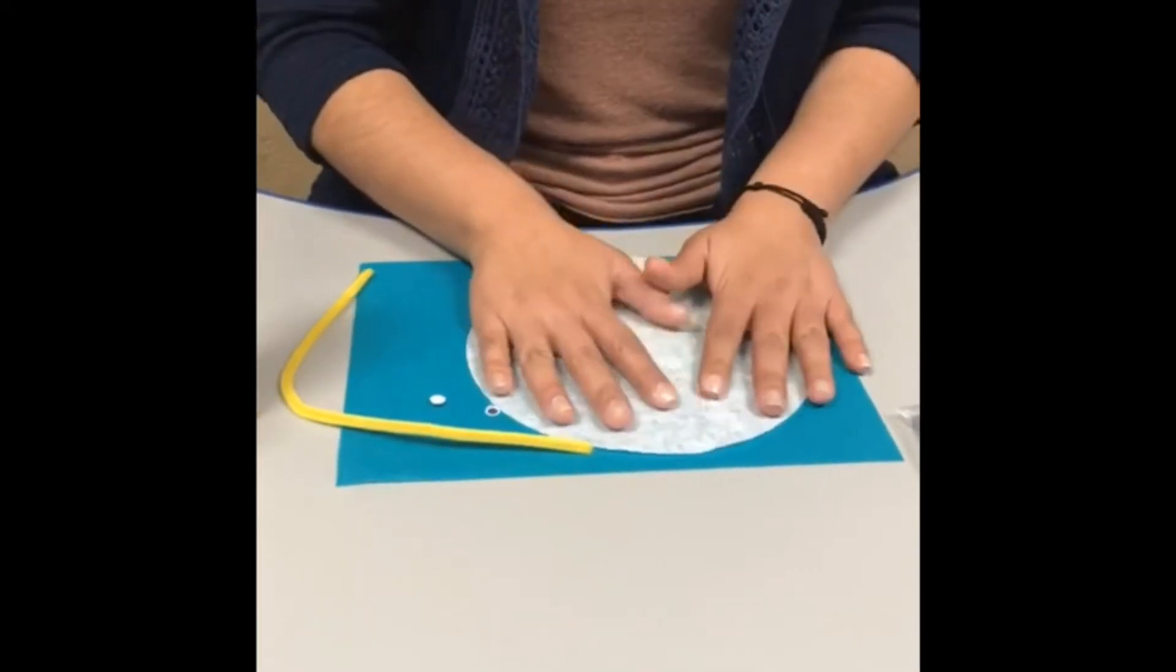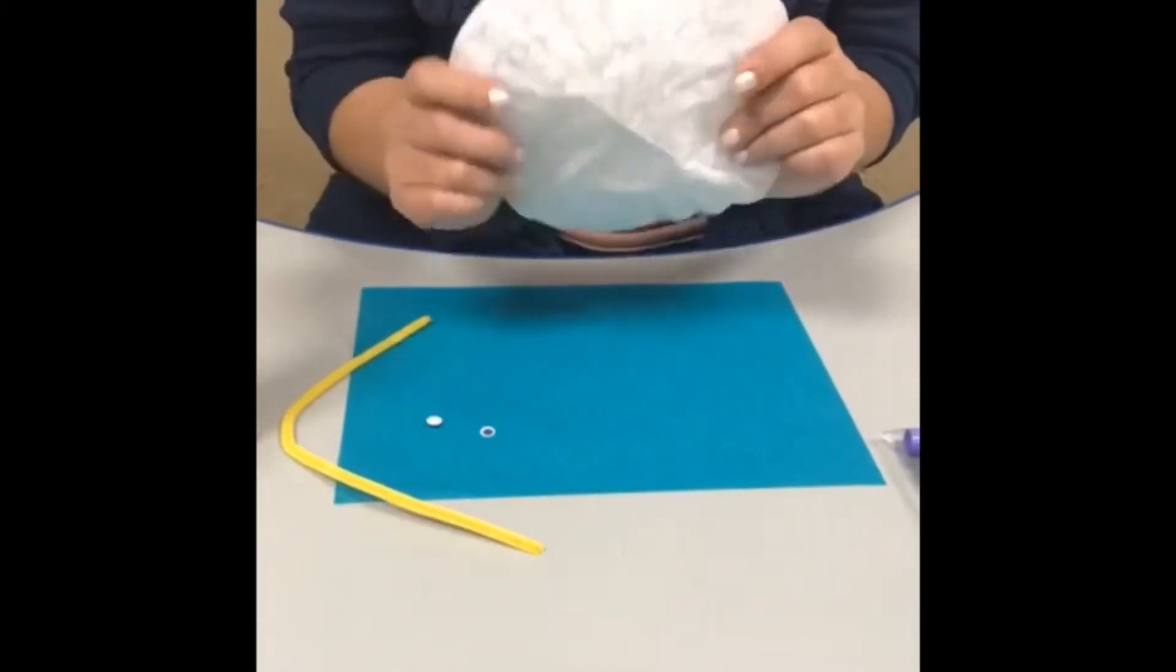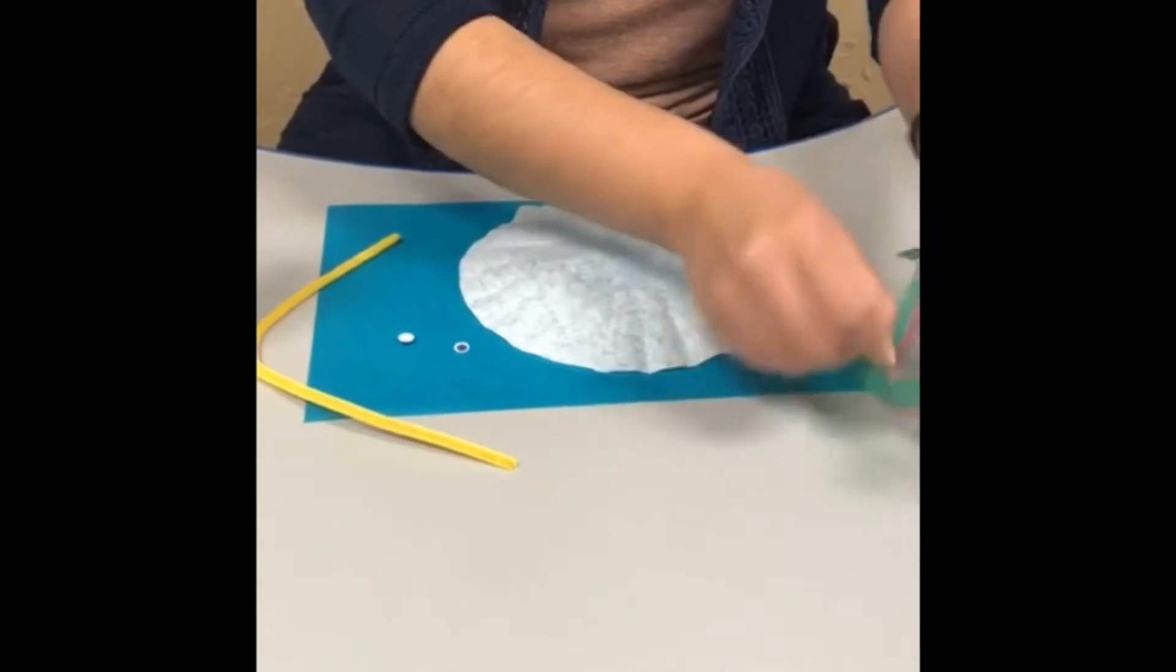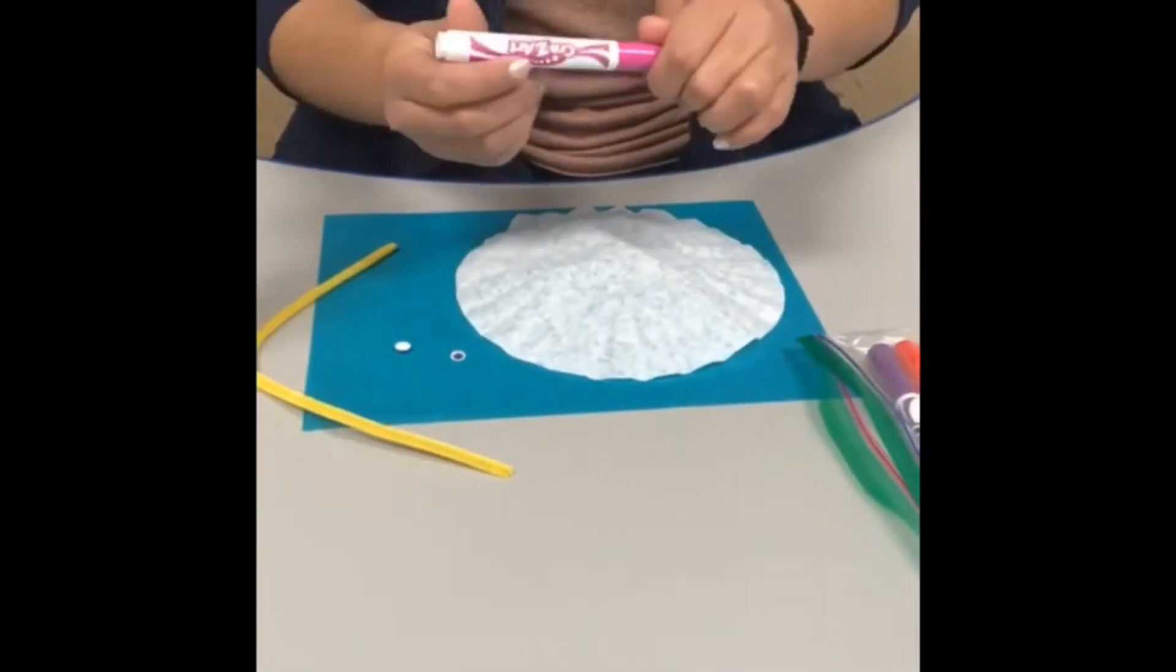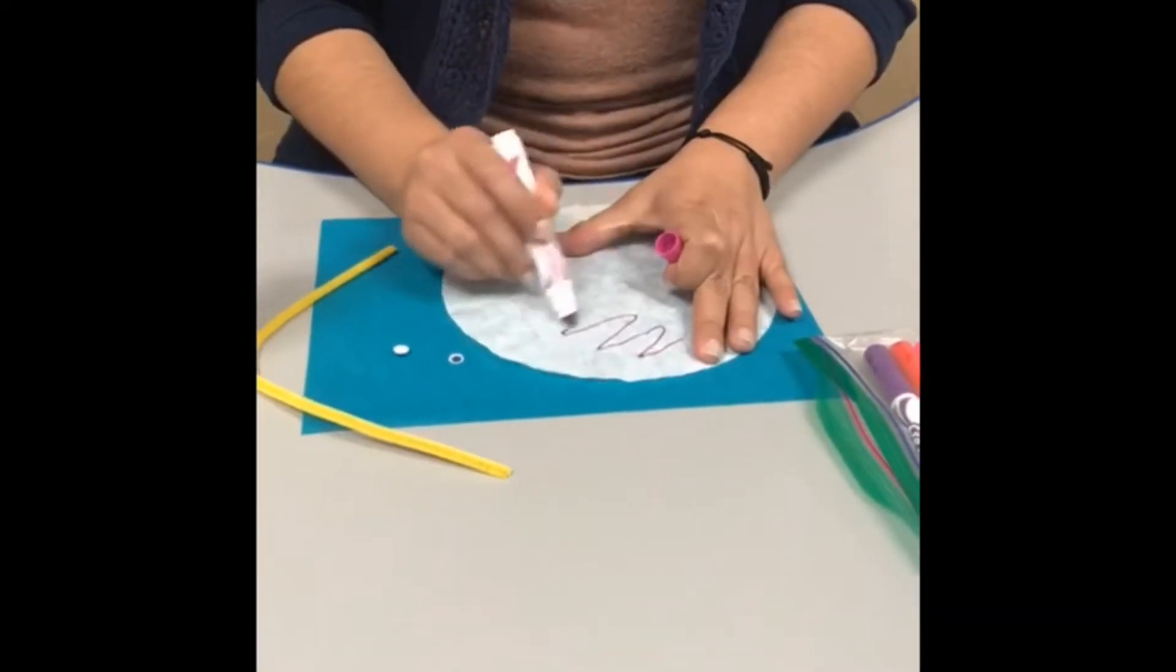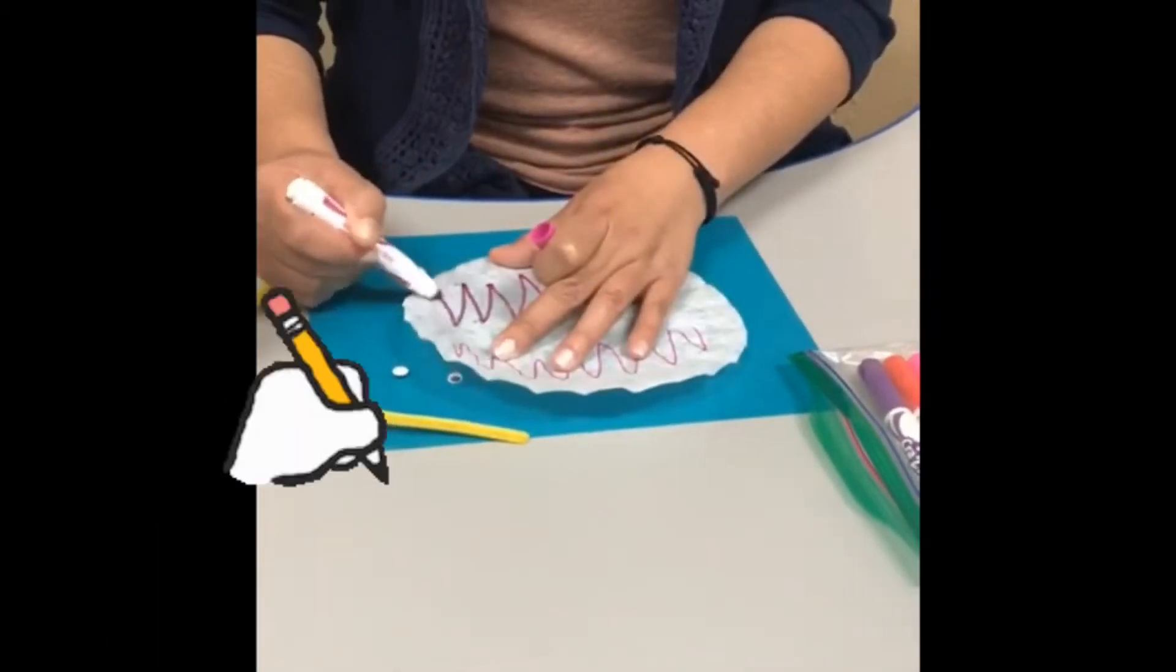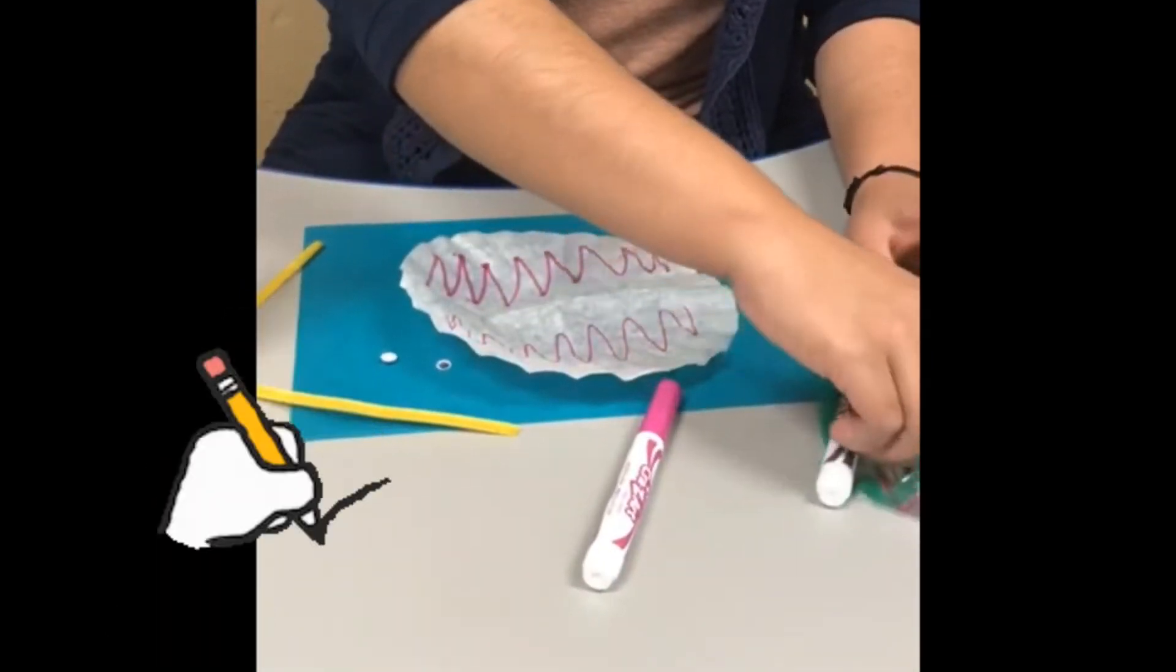So our butterfly needs to be very colorful. As you can see, the circle coffee filter is plain and white. So you need to add some color, my friends. So using your markers, grab any colors you like. I like this color. So you're just going to make designs. I'm doing zigzags. You can make zigzags, lines, circles, swirls, dots, triangles, whatever shape you like, my friends.